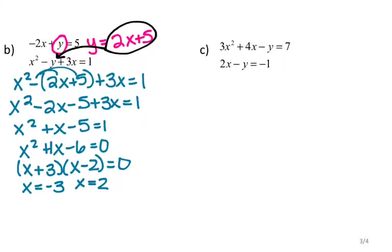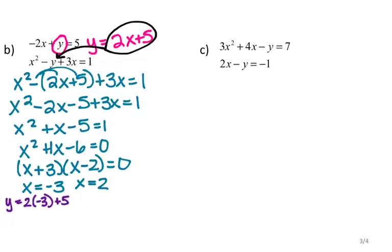Since there are two solutions for x, I need to plug both into the equation for y. I'll use the equation that already has y by itself: y equals 2x plus 5. For x equals negative 3: y equals 2 times negative 3 plus 5, which is negative 6 plus 5, which is negative 1. So the first ordered pair is negative 3, negative 1.